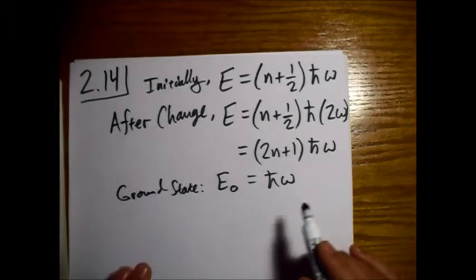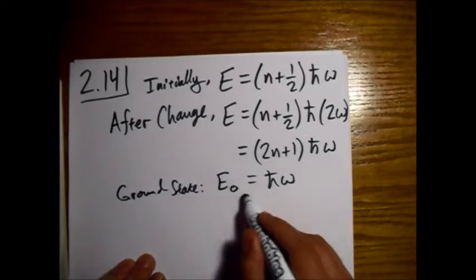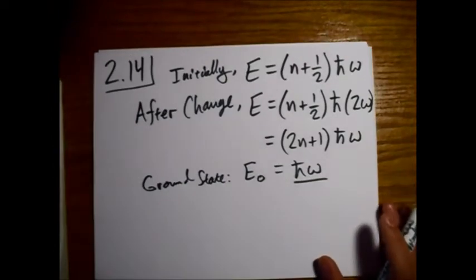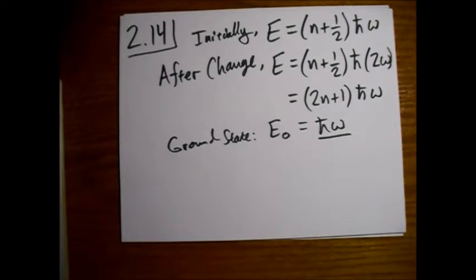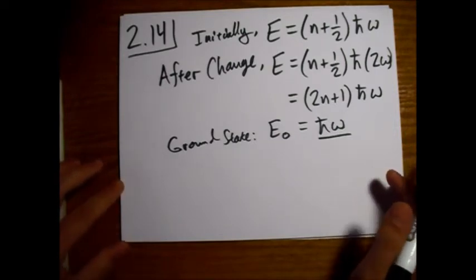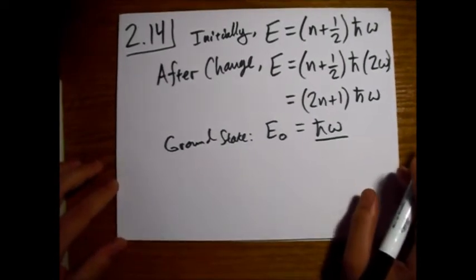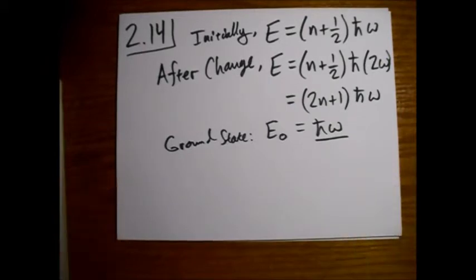All right. So now we want to know, well, what's the probability of getting our new ground state of h-bar omega? And basically, what we're trying to do is expand our original wave function in terms of our new eigenstates with the new Hamiltonian.